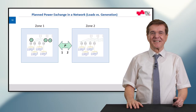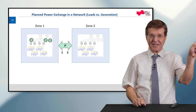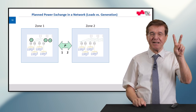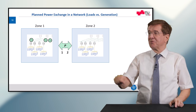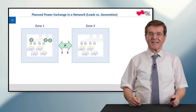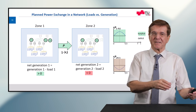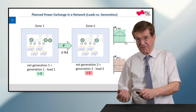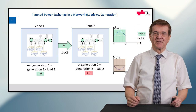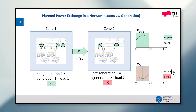Here you can see a network which consists of two zones. Zone number one is on the left side and has three generating units, for example. Zone number two is on the right side and has two generating units. This means there is a surplus of power in zone 1, a deficit of power in zone 2, and there is a power flow from zone 1 into zone 2 — and this keeps the system stable.